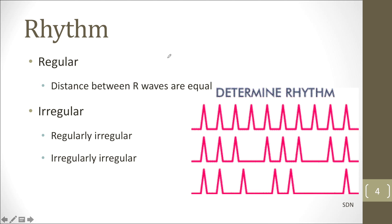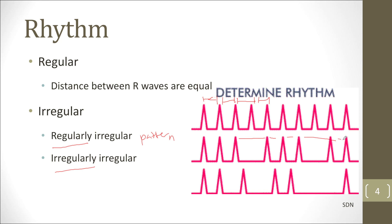The next thing is rhythm. Rhythm can be broken down into two components: it'll either be regular or irregular, and irregular can be broken down further. Regular means the distance between all the R-waves is equal. Irregular means the R-waves are not equally spaced, but you can have them regularly or irregularly spaced. The key question is: is there a pattern? Regularly irregular has a pattern — like one, one, two repeating. Irregularly irregular is just random spacing with no pattern.